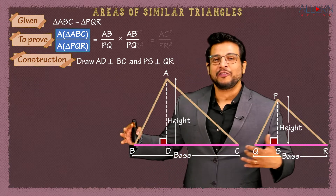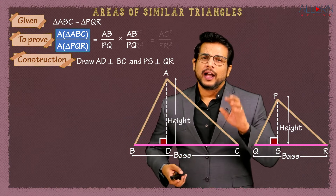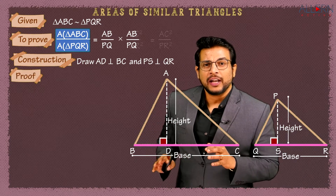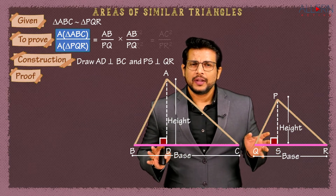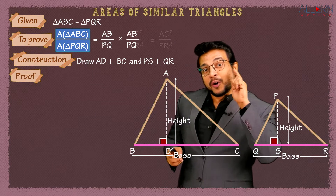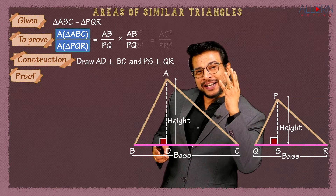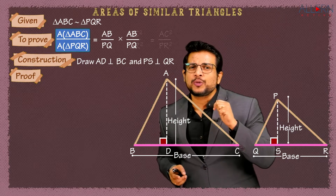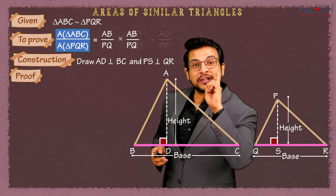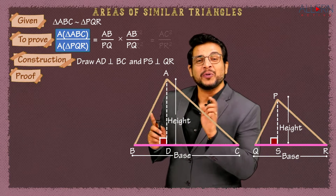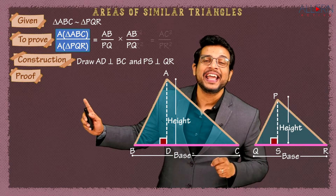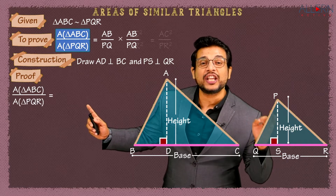Now let's start the proof. We have the base and height for both triangles, but the heights are not equal and the bases are not equal. So we use the first property: area upon area equals (base × height) upon (base × height). Therefore, area of triangle ABC upon area of triangle PQR equals BC × AD upon QR × PS.